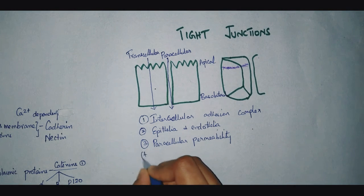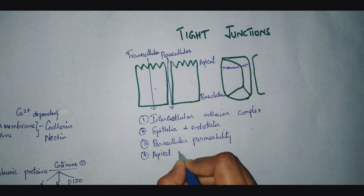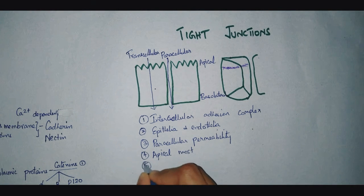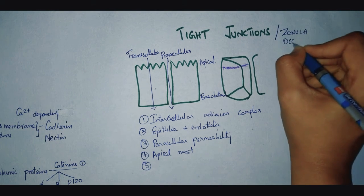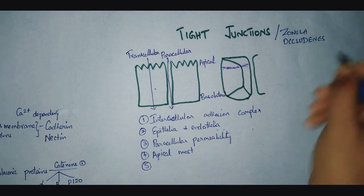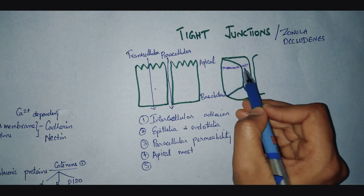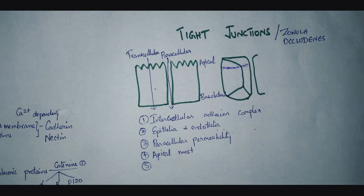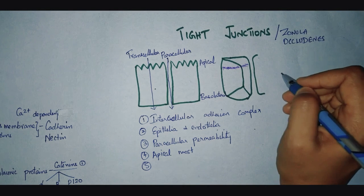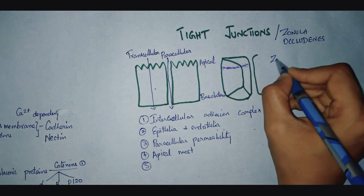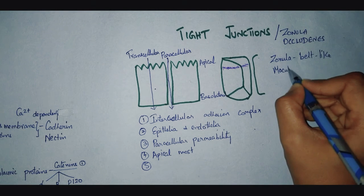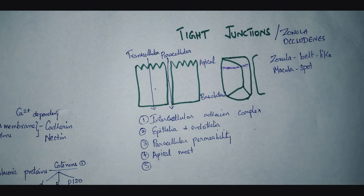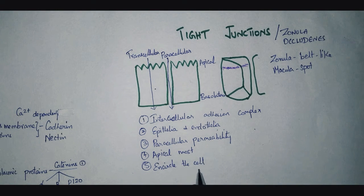Tight junctions are the apical-most of all the junctional complexes. As their name — zonula occludens — suggests, they are belt-like and encircle the entire cell. The term zonula means belt-like, whereas the word macula means spot or patch-like. So tight junctions encircle the entire circumference of the cell.